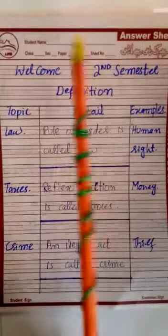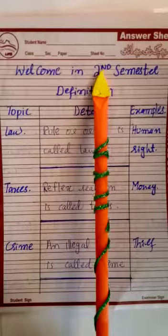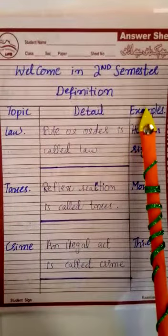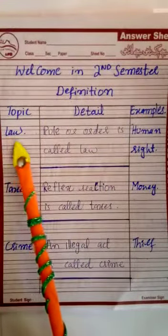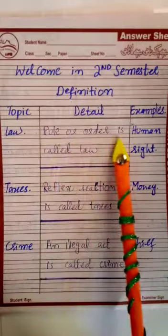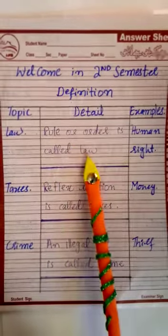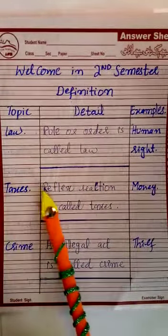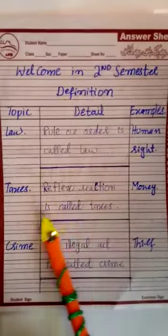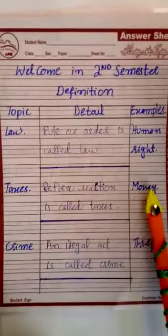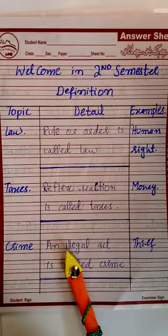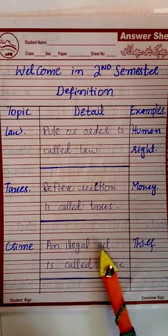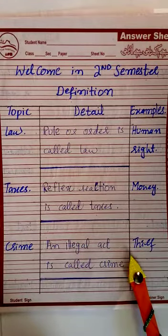Welcome to the second semester definitions. Here are some topic details and examples. The first definition is Law — a rule of order is called law. The example is human rights. Taxes — reactions is called taxes. Money crime and illegal act is called crime, for example, theft.